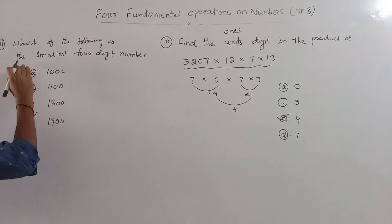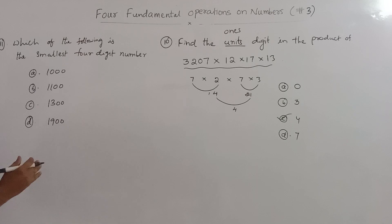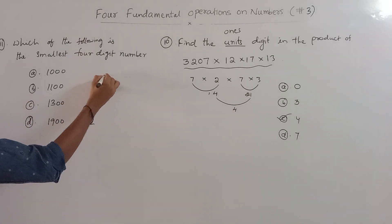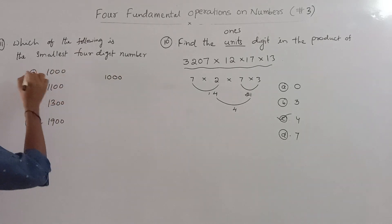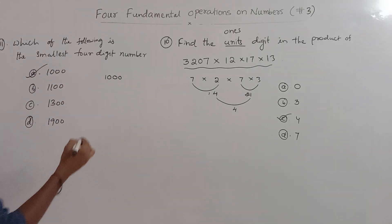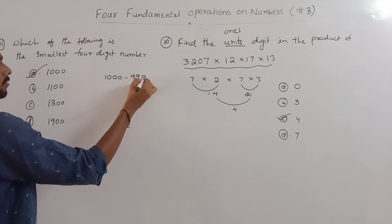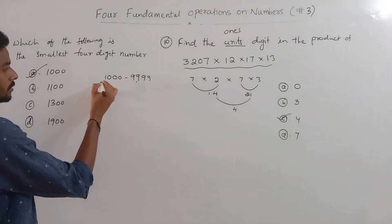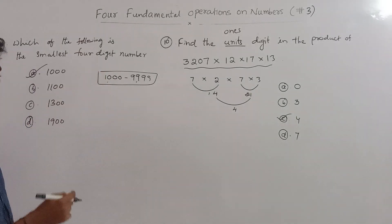Okay, look at question 11: which of the following is the smallest four-digit number? The smallest four-digit number is 1000 — that is, 1 followed by three zeros. The largest four-digit number is 9999. So the answer is 1000.